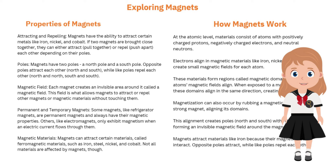Magnetization can also occur by rubbing a magnetic material with a strong magnet, aligning its domains. This alignment creates poles — north and south — within the material, forming an invisible magnetic field around the magnet. Magnets attract materials like iron because their magnetic fields interact; opposite poles attract while like poles repel each other.